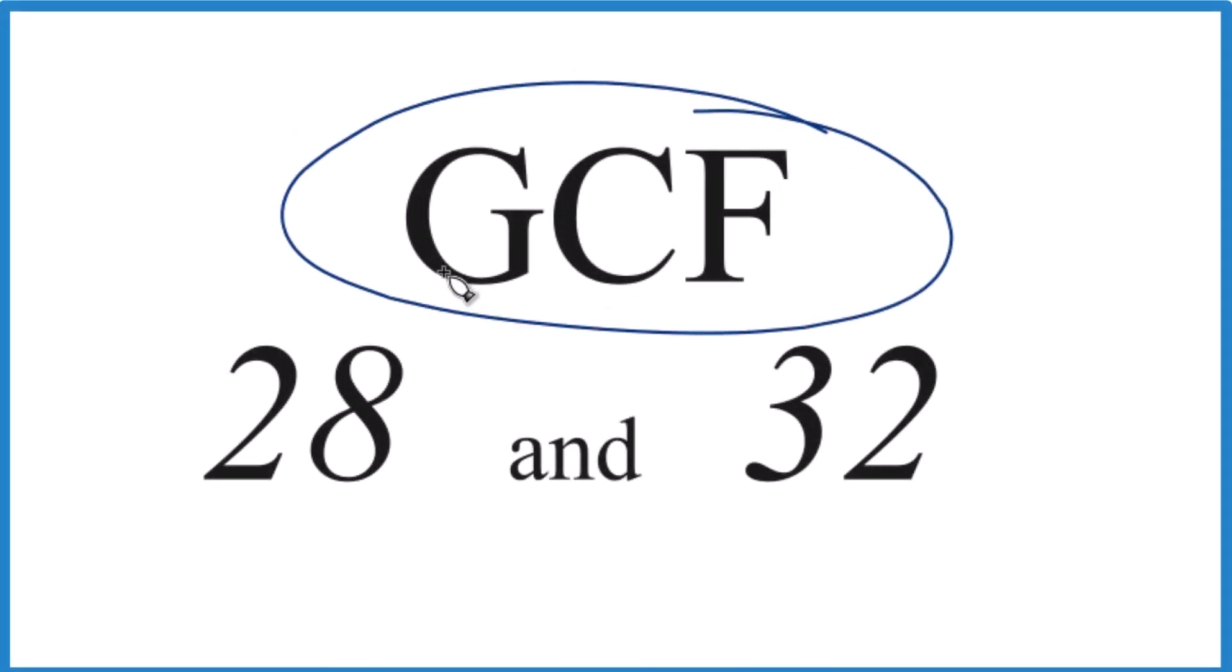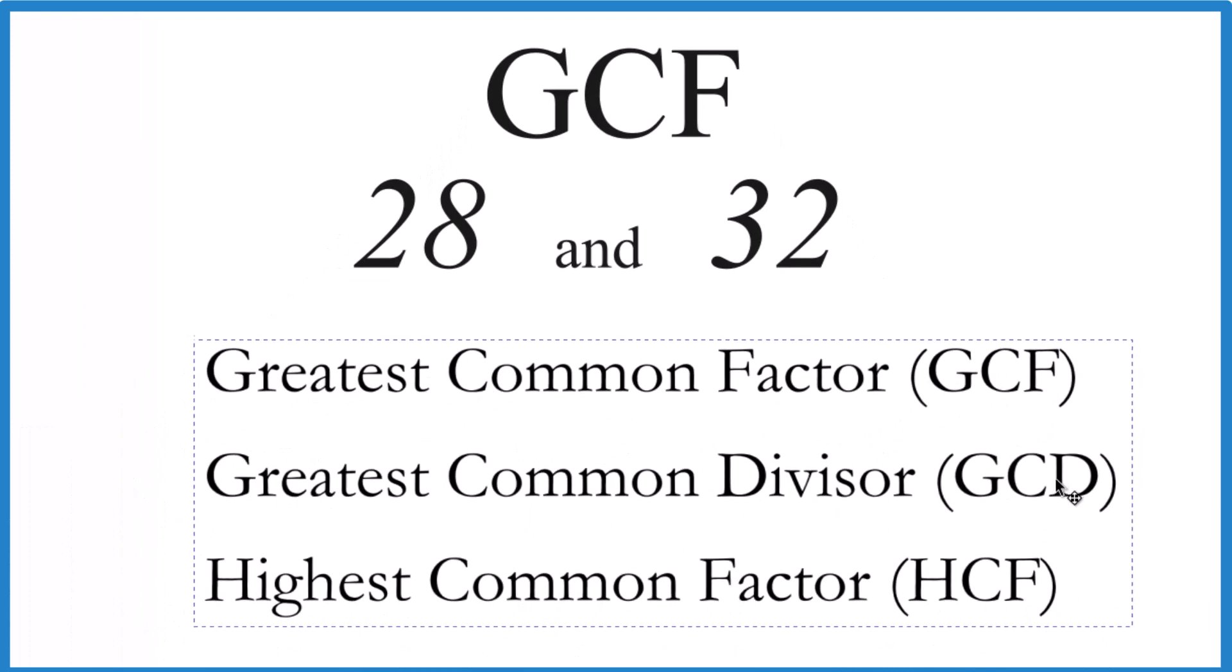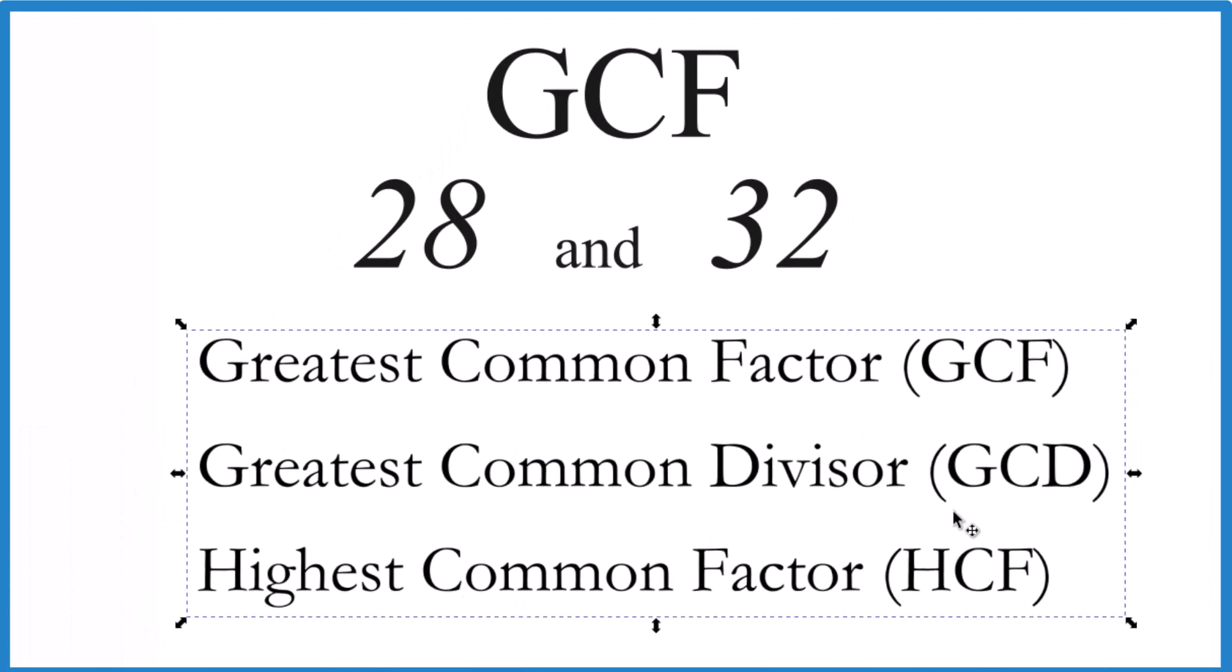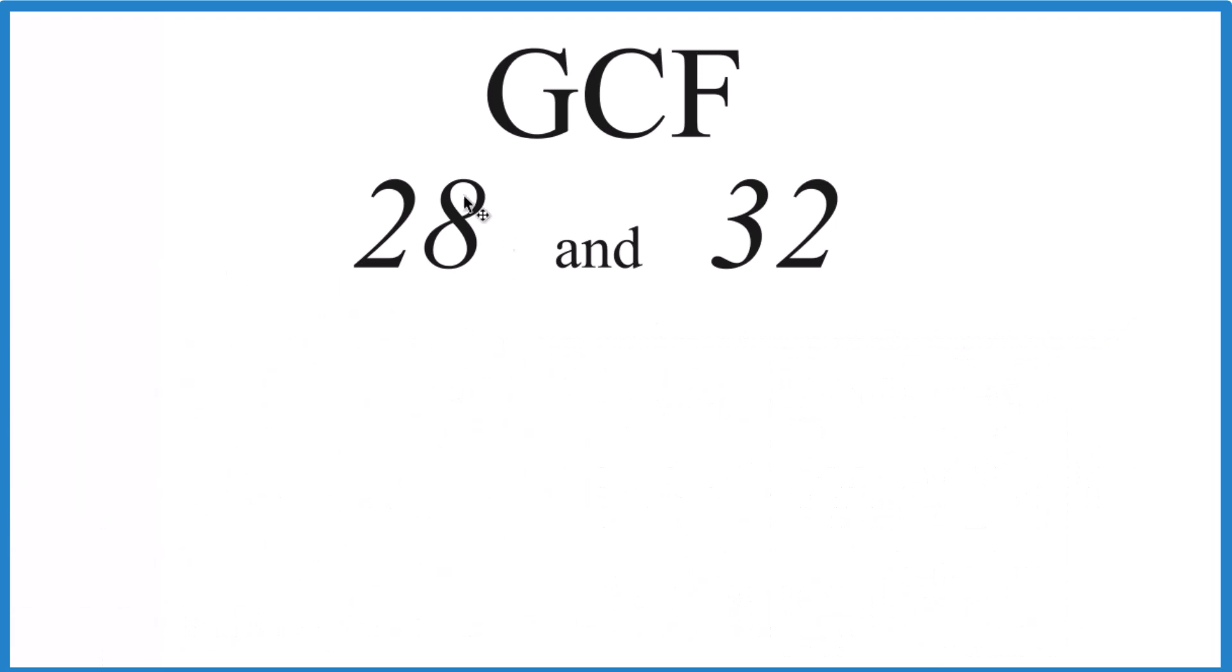Let's find the GCF, the greatest common factor, for 28 and 32. So here's how we do this. The greatest common factor, that's also called the greatest common divisor or the highest common factor. I like greatest common factor. So we're going to make a list of all the factors here of 28 and then of 32.